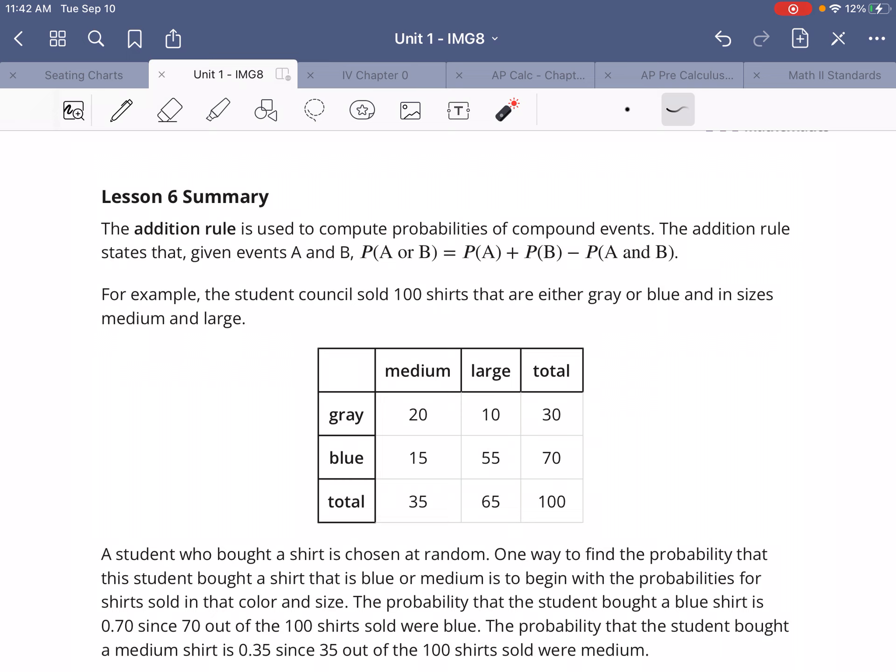When we talk about a compound event, we mean what is the probability of this or that happening - two different things that don't have to both go together. So in this case, what's the probability of either gray or medium?